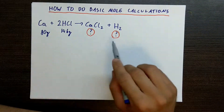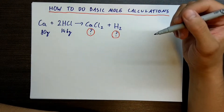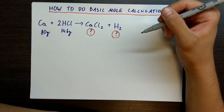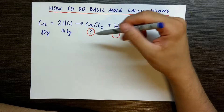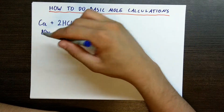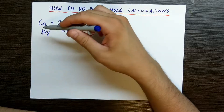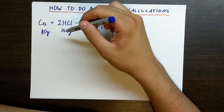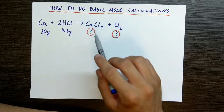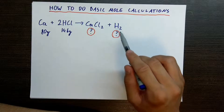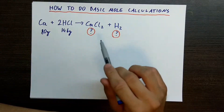So here we have a question. One of the most basic things we can do with moles is figure out how much of the products we're going to get from a reaction based on the masses of the reactants. So we have 80 grams of calcium reacting with 146 grams of hydrochloric acid, giving us calcium chloride and hydrogen. We need to figure out how much of each in grams we're going to get.